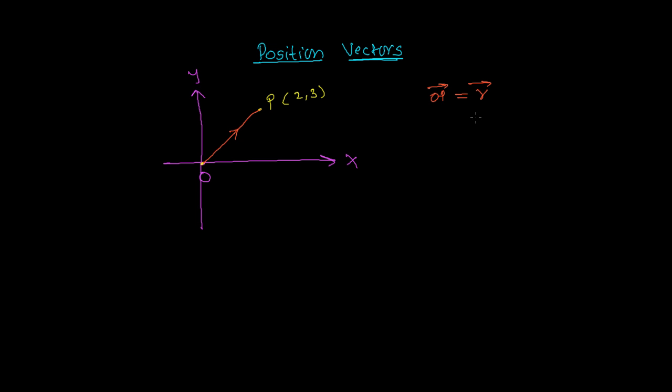then that time this vector R is called position vector. This is representing a position vector.